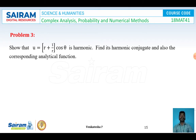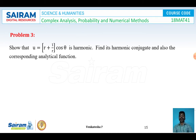Problem 3: Show that u = (r + 1/r)cos θ is harmonic and find its harmonic conjugate and corresponding analytic function. Since the problem is in polar form, we find ∂u/∂r, ∂u/∂θ, ∂²u/∂r², and ∂²u/∂θ². We must prove ∂²u/∂r² + (1/r)·∂u/∂r + (1/r²)·∂²u/∂θ² = 0.